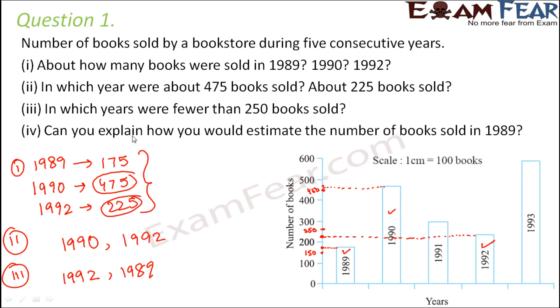Number 4: can you explain how you would estimate the number of books sold in 1989? When you look at 1989, what do you see? We already explained it. So this till here it is 100. Now between 100 to 200, you have 10 such units. So basically those 10 units represent 100 books. So we can estimate it like this.